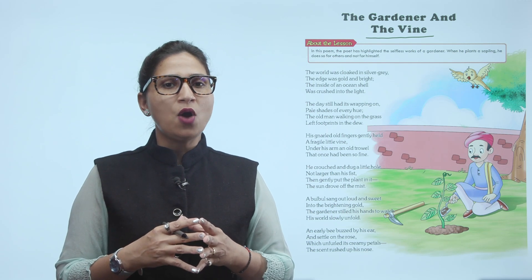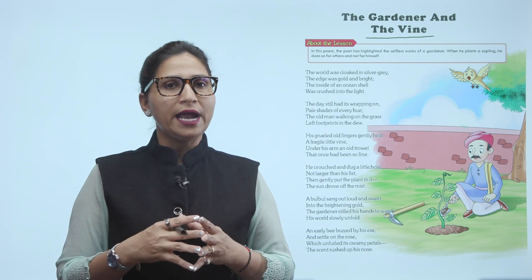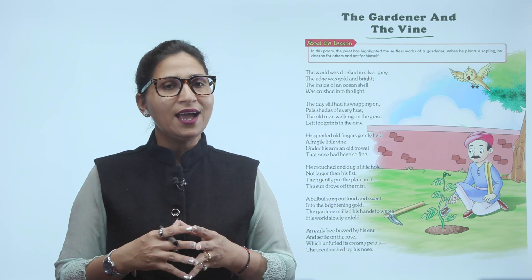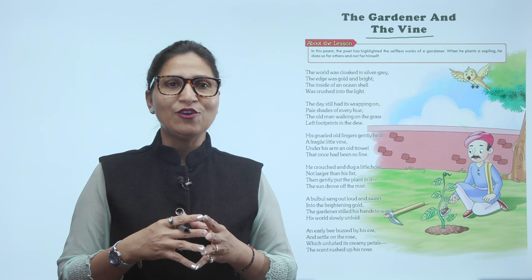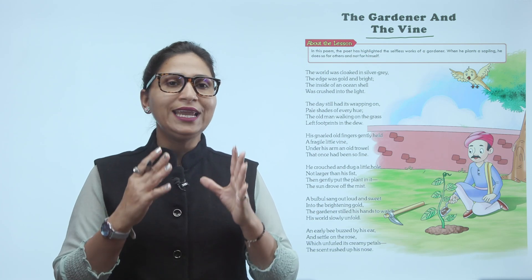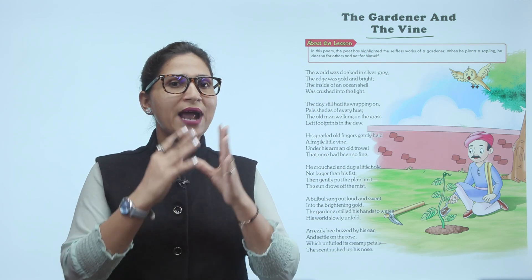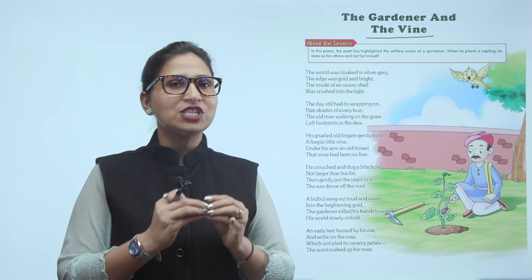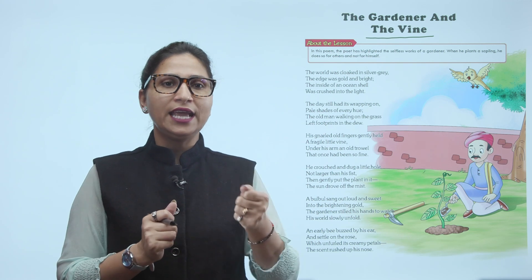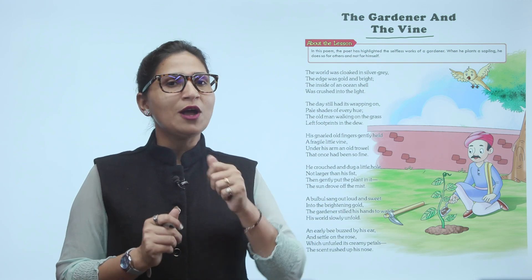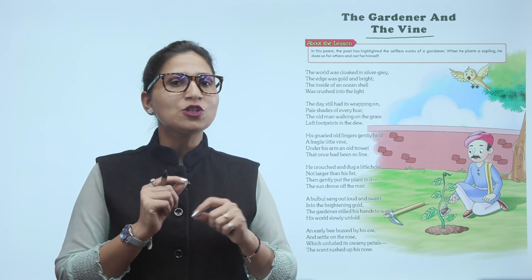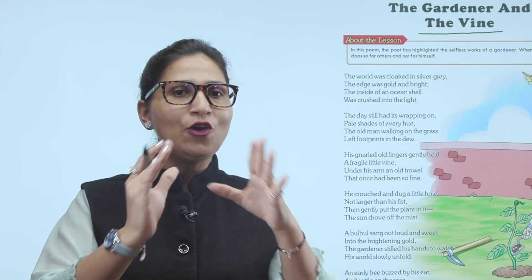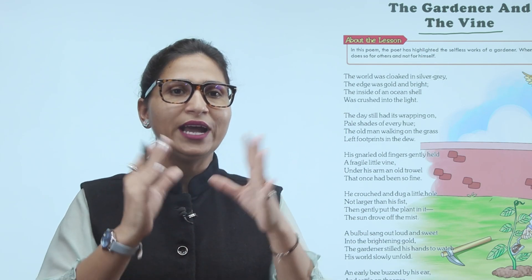A bulbul sang out loud and sweet into the brightening gold. The gardener stilled his hands to watch his world slowly unfold. Jo bulbul hai, woh kya kar rahi hai? Bada loud, sweet song sing kar rahi hai. Brightening gold — jo color raha hai. Jo gardener hai, woh still kya kar raha hai? Apne haath ke dekh raha hai, usko watch out kar raha hai — world slowly unfold — matlab sun dhire dhire upar raha hai, woh unfold ho raha hai — means kya hota hai? Uncover ho raha hai.